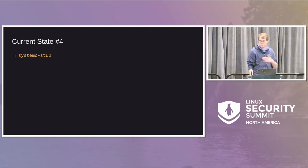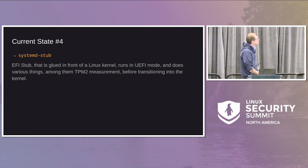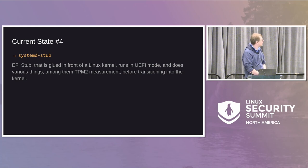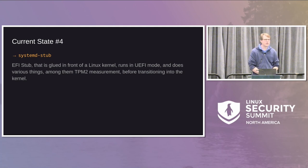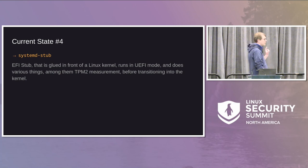The next thing is the systemd-stub, which was mentioned in the earlier talk. systemd-stub is an EFI stub glued in front of the Linux kernel; it runs in UEFI mode and does various things. One thing relevant here is TPM measurement of the components of the UKI, also done into PCR 11. If you pick a different kernel, PCR 11 contains the identity of that kernel. PCR 11 is assumed to be zero when initialized, so it becomes an identifier of the kernel booted along with its initrd and all other components, also encoding which boot phase you're in.